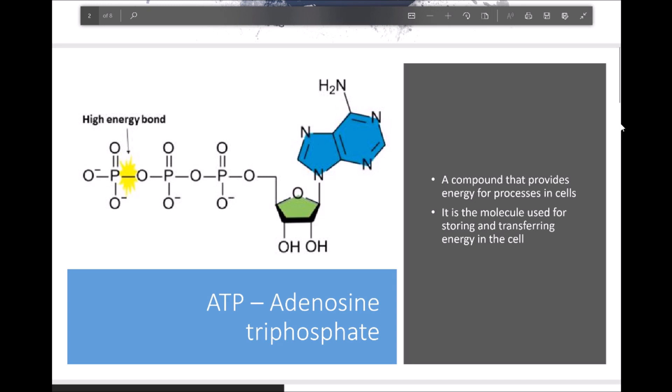Adenosine triphosphate is a high energy molecule that is used for providing energy for the processes that occur within cells. It's like an energy commodity within a cell, so it's used for storing and transferring energy throughout cells.